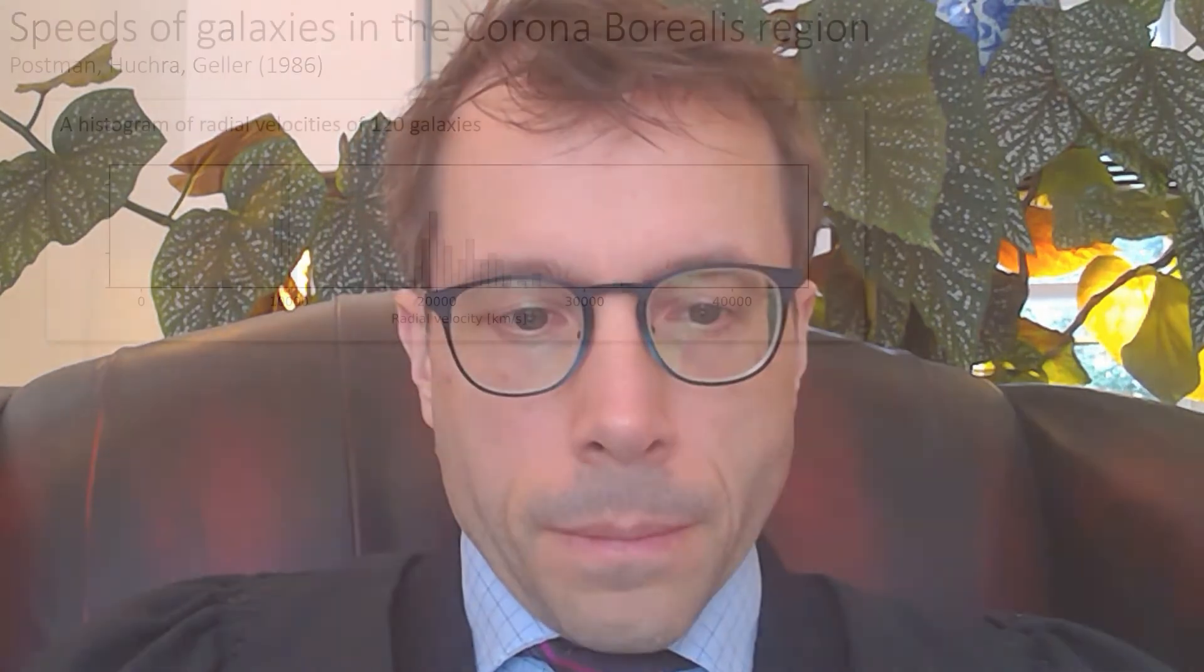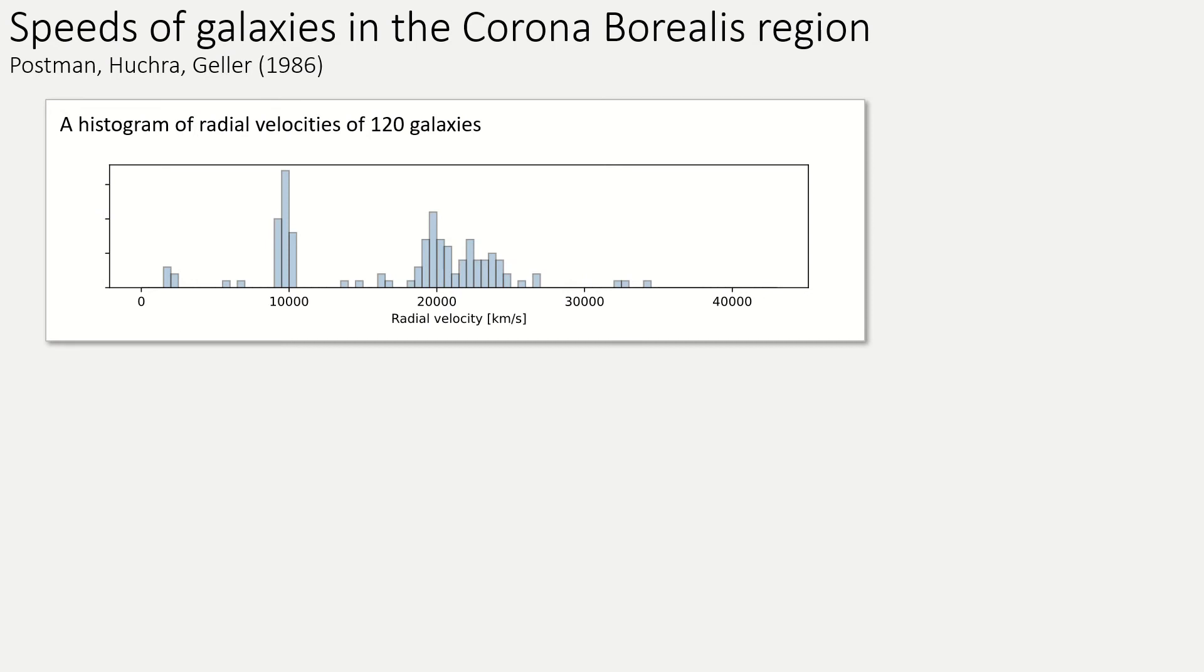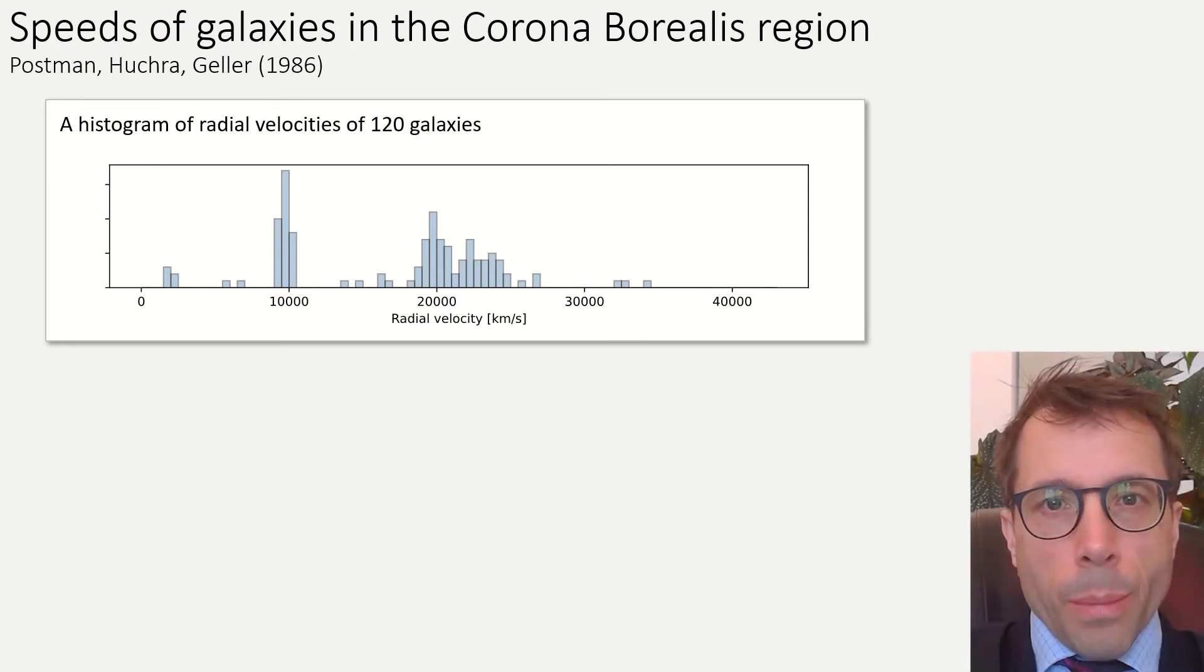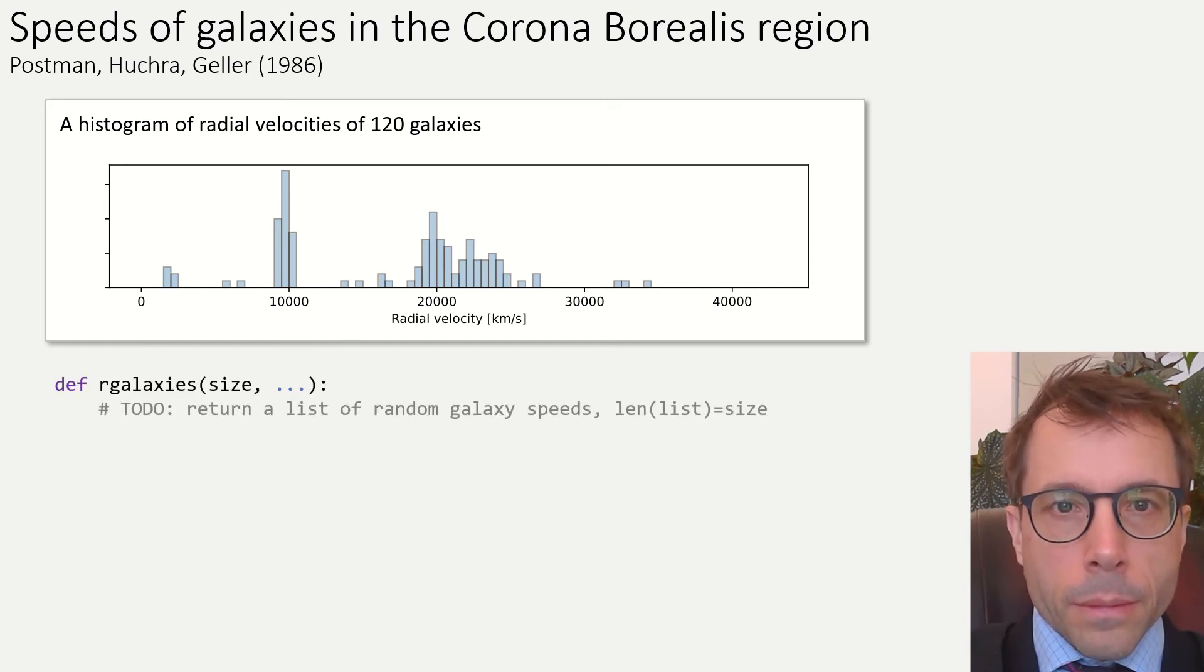Let's look at another example. This dataset comes from an astronomy paper published in 1986 about large-scale structure in the universe. We know the universe is expanding, so the galaxies we can observe are moving away from us, and the speed can be measured by redshift. But if the universe is made up of filaments of galaxies with great big voids between them, then when we plot a histogram of galaxy speeds, we'll see the speeds clustered. And that's what this dataset shows. The exercise here is to come up with a probability model, to define a function that returns a random galaxy speed.